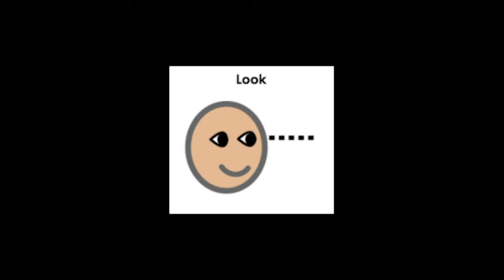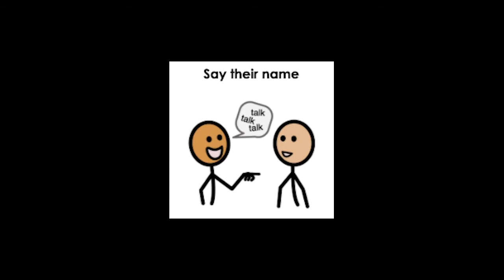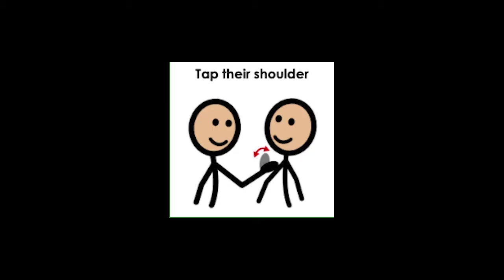Number one is you look at the person whose attention you're trying to gain. Number two is say the person's name. And number three, if they don't look at you, tap their shoulder.